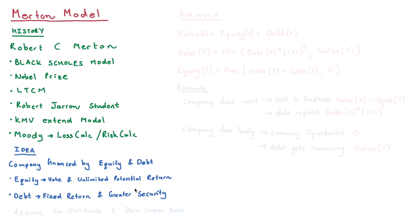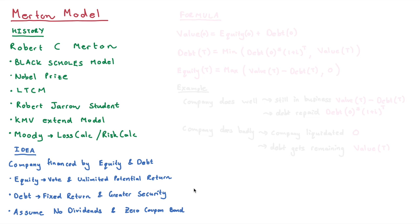Two key assumptions in the Merton model: we assume that our equity is not paying any dividends, and we also assume that debt is simply a zero-coupon bond, which means all interest repayments are combined in the final redemption date. Keep those two assumptions in mind.